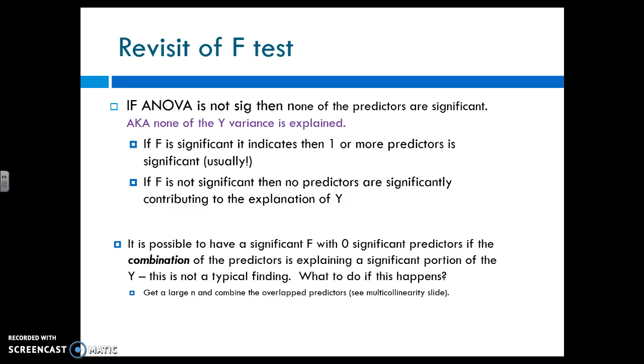So just to review, the F test is looking at is all of the model significant? As a whole, is this significant? So if ANOVA is not significant, then none of your predictors are either, meaning none of the variance of Y is being explained. If F is significant, then usually one or more of your predictors is significant. It is possible that you could have a significant model and no predictors are significant individually, meaning you have multicolinearity issues and a combination of two of your X values. Together, explain Y, but individually don't. Not typical, and it's a huge mess if you find it.